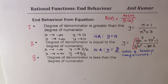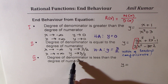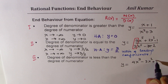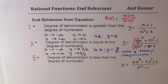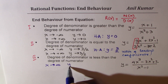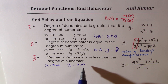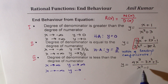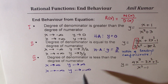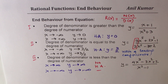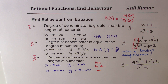In Case 3, the degree of the numerator is greater than the degree of the denominator — for example, y = (4x³ − 3x² + 2)/(x² − 1). As X approaches positive infinity, Y also approaches positive infinity. When X approaches negative infinity, the numerator becomes negative while the denominator stays positive, so Y approaches negative infinity. In this case, there is no horizontal asymptote.